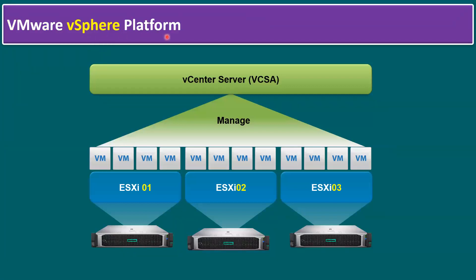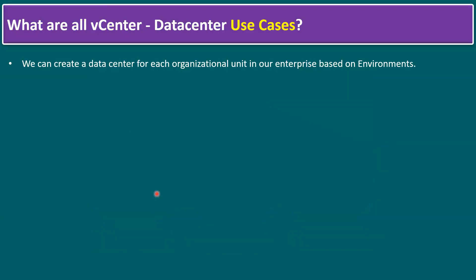Another basic point is the VMware vSphere platform. VMware is the leading provider of virtualization software, and the most common virtualization software is vSphere, used for server virtualization. In this diagram we have three HPE servers running ESXi operating system — ESXi 1, 2, 3 — and above ESXi we can create multiple virtual machines. To manage multiple ESXi hosts and virtual machines we need a vCenter Server, also called vCenter Server Appliance. vSphere platform means a combination of vCenter and ESXi hosts.